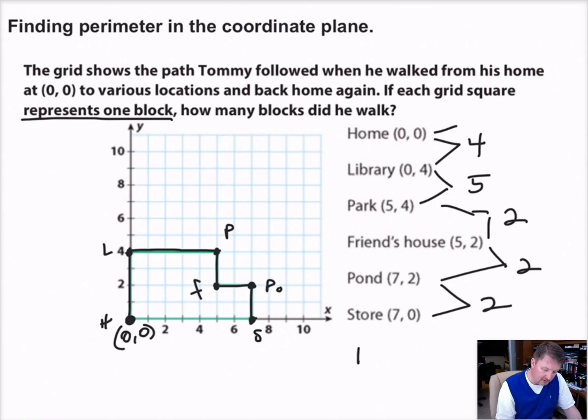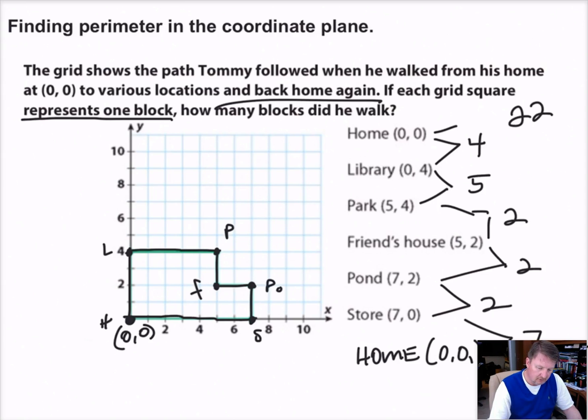And then he went back home at 0, 0. That's what the thing said. And back home again. So he went 1, 2, 3, 4, 5, 6, 7 blocks all the way home. So now we've got to add all these up. I'm kind of writing over my picture here. So I'll add them up to the top. 7 and 2 is 9. Plus 2 is 11. Plus 2 is 13. Plus 5 is 18. Plus 4 is 22. So he walked a total of 22 blocks. Simple as that.